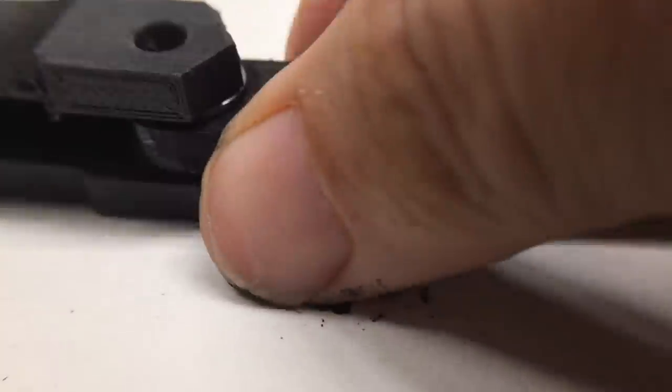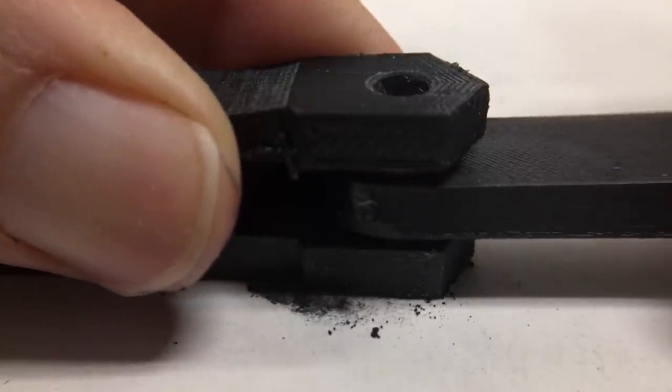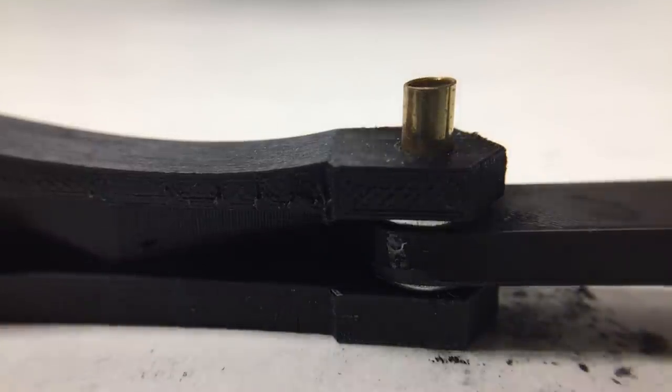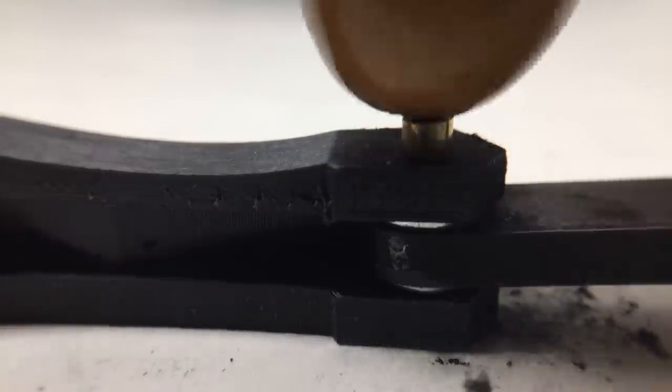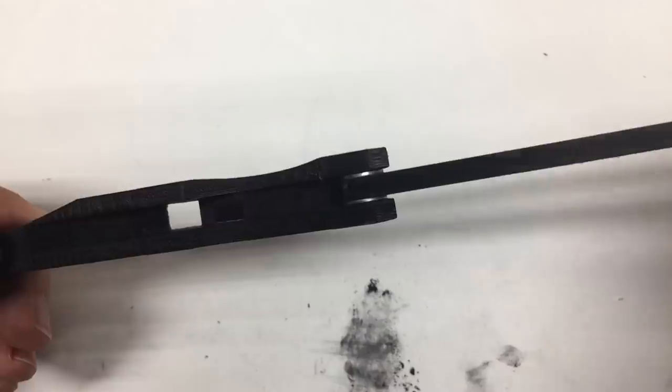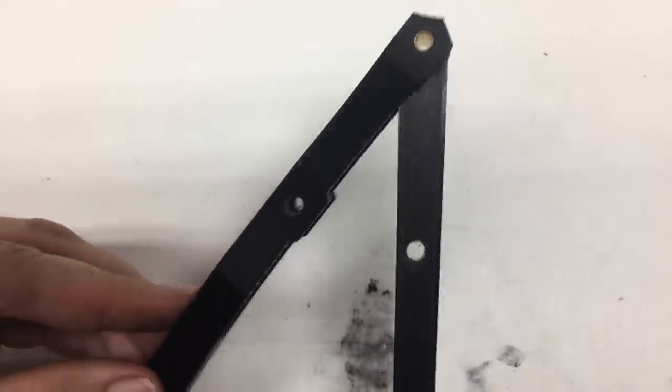Then you assemble the joint, but notice how the parts aren't very aligned. I use a small flat head screwdriver to jockey the parts into position. Once the parts are aligned, you can tap the pin down into place. The assembled joint should have no slop and have a very smooth action.